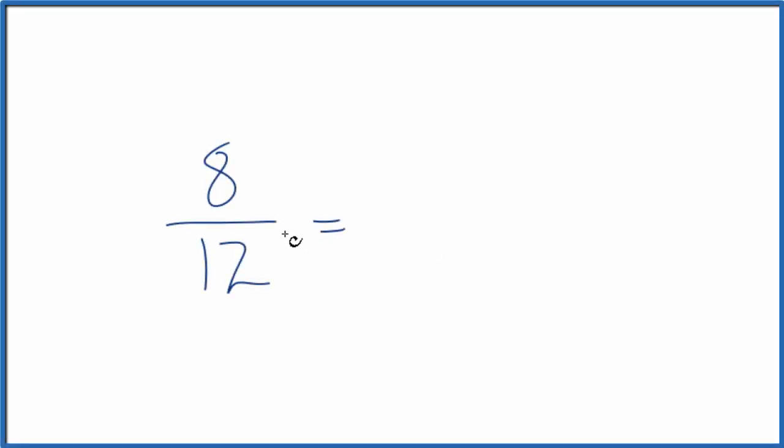Let's find several equivalent fractions for 8 twelfths. That's 8 divided by 12. And what we're really trying to do here, we're trying to find another fraction that's equal, has the same value, but it has a different numerator and a different denominator.